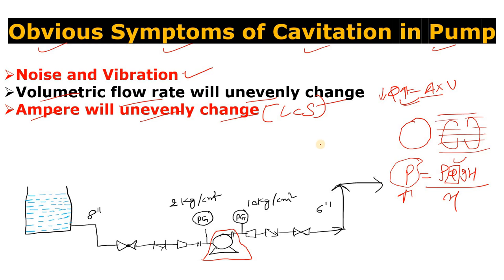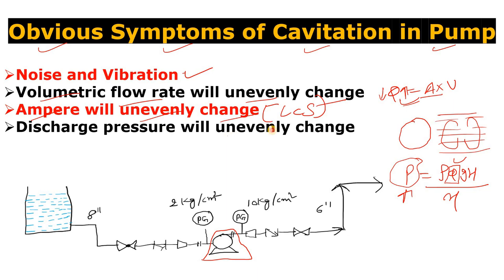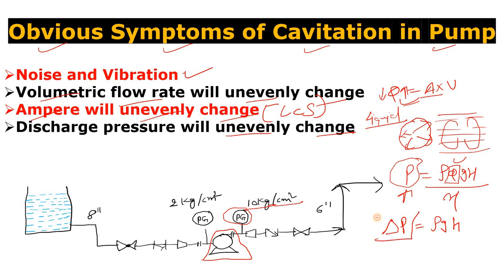The next symptom is that the discharge pressure will unevenly change. You can see here this is the discharge pressure gauge showing 10 kg per centimeter square. Using the formula delta P equals rho times g times h — as vapor bubbles form, the density of vapor is lower than that of liquid, so delta P will be low. The discharge pressure will unevenly change: it will increase, then decrease, then increase, then decrease — fluctuating in that manner.